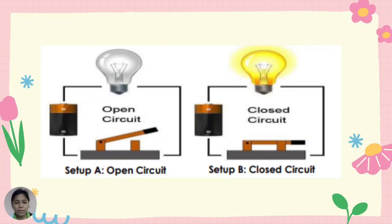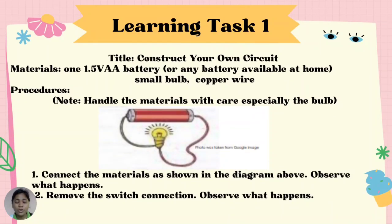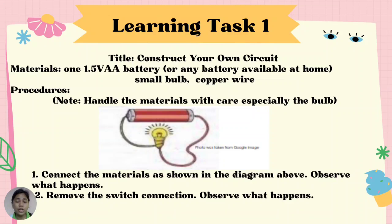For our first learning task: Construct your own circuit. The activities that you are going to perform will clearly explain the conditions necessary to make a bulb light up. Prepare the following materials — if not available, you may use other materials at home. You may ask the help of your parents, guardians, or any adult member of the family if needed. Materials needed: one 1.5-volt or AA battery or any battery available at home, a small bulb, and copper wire. Procedure: Connect the materials as shown in the diagram and observe what happens. Then remove the switch connection and observe what happens. Handle the materials with care, especially the bulb.